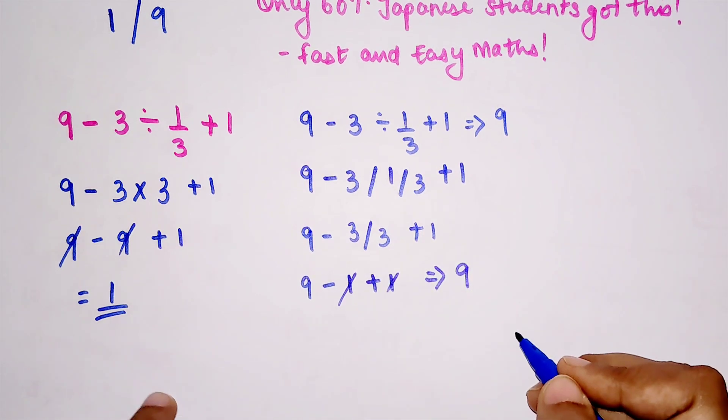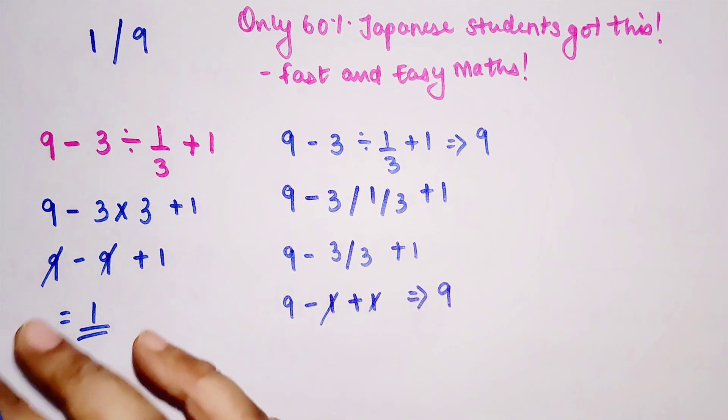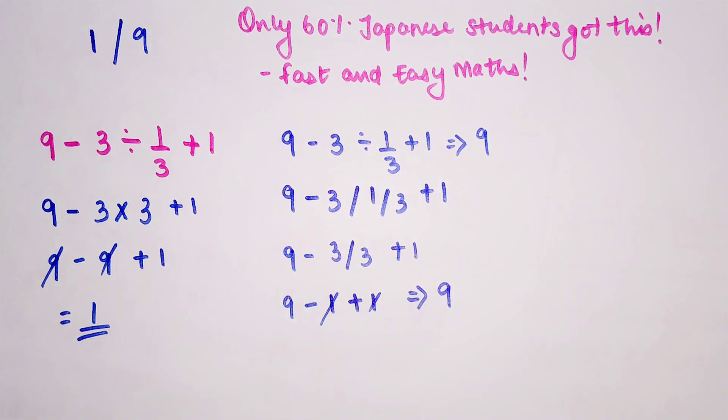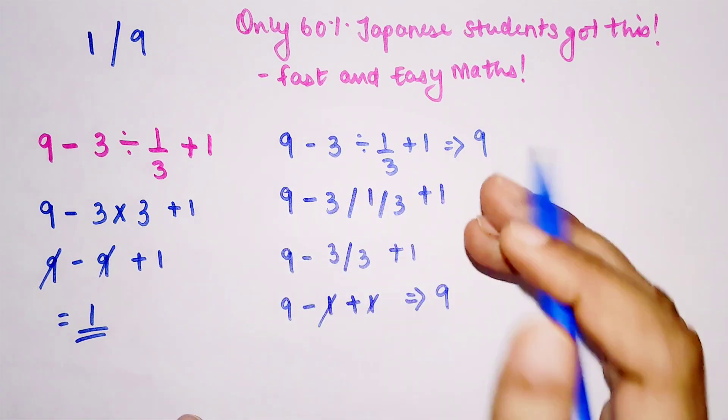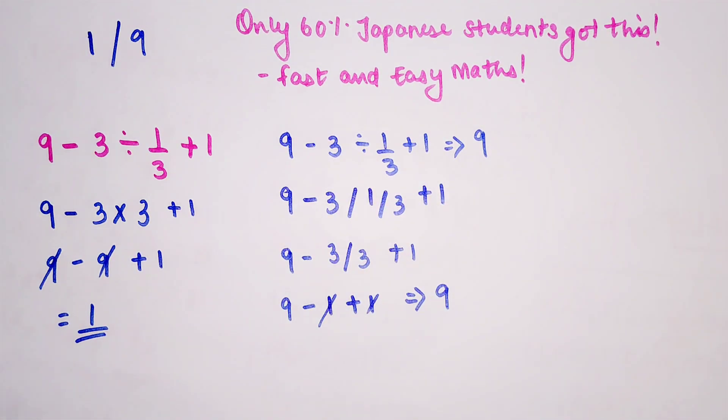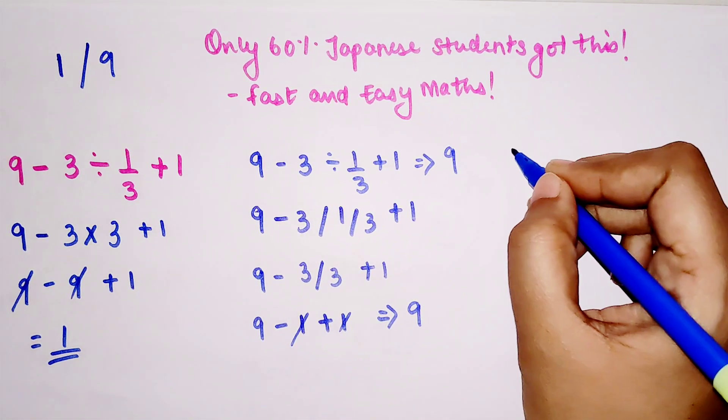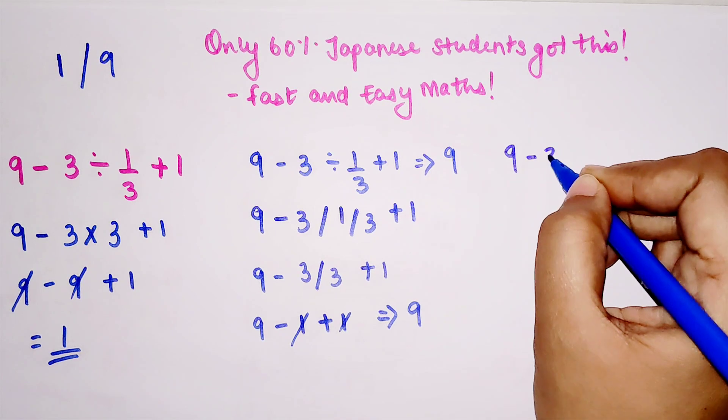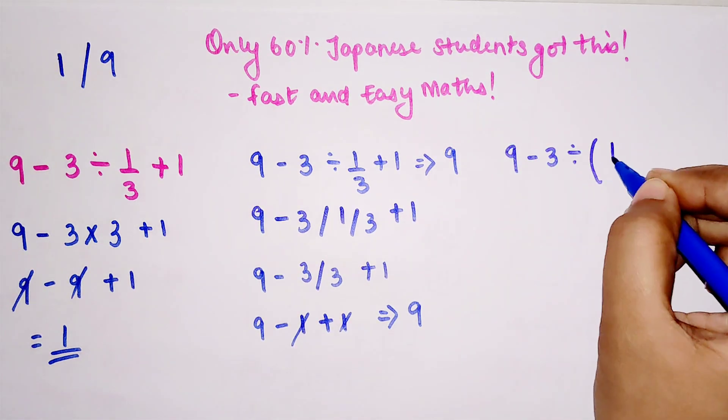Trust me, they are absolutely correct in getting this answer. The solution to this is: when inputting these kind of questions in your calculator or Google, you should do 9 minus 3 divide by—put a bracket.